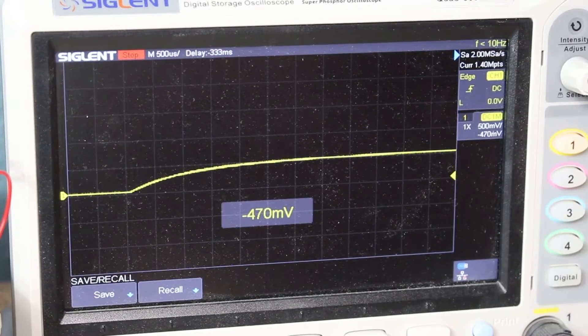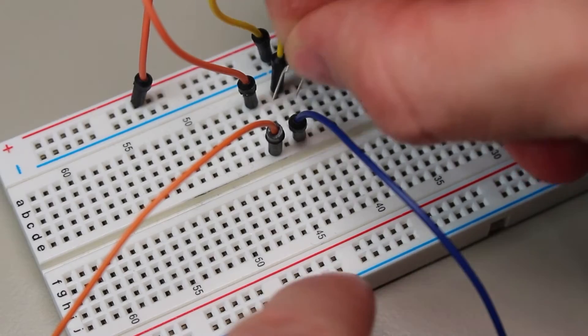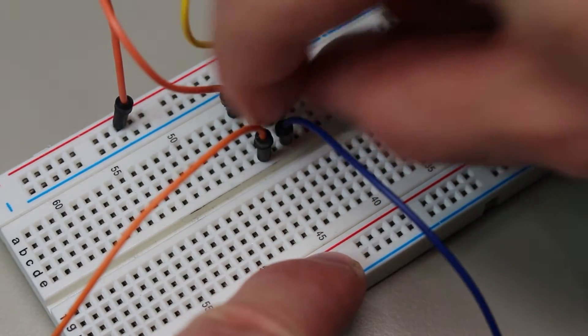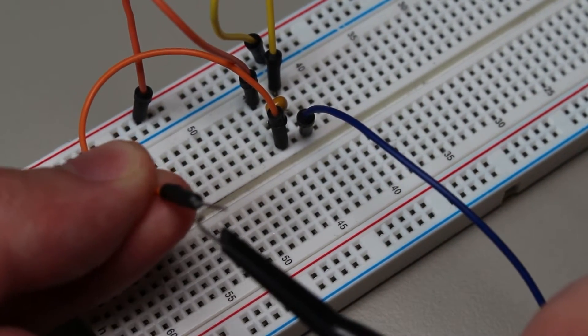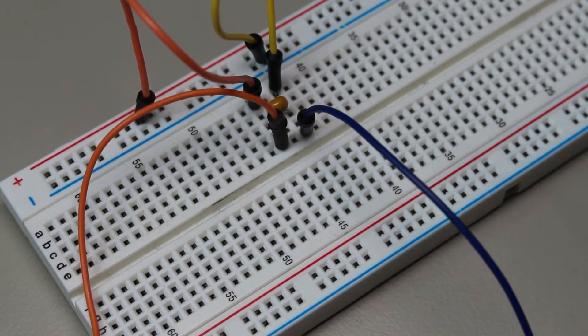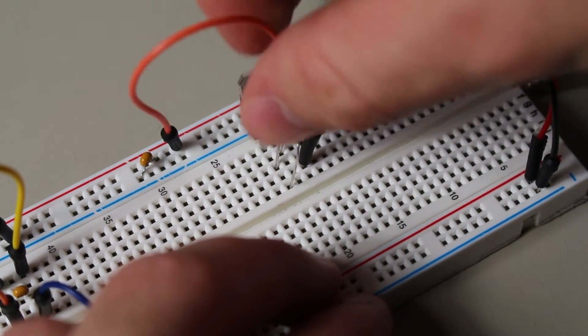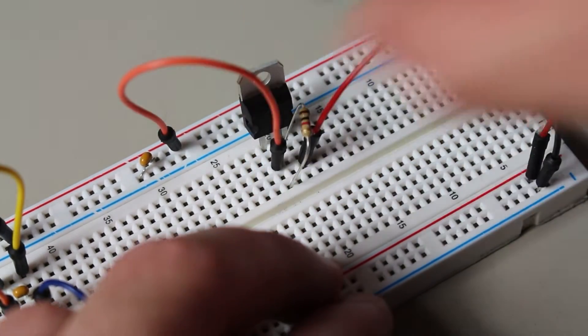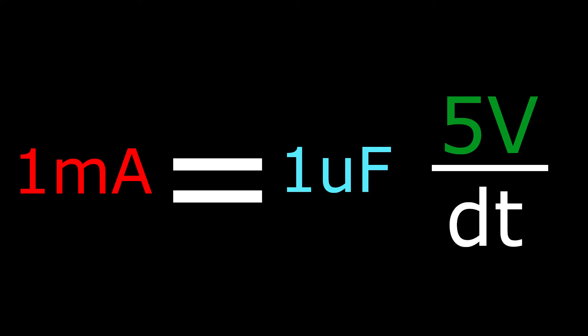The charging process can be modeled by this equation. The current equals the capacitance multiplied by the change in voltage over the change in time. This equation may be hard to grasp visually, so let's walk through an example. Let's say that we have a fully discharged 1 microfarad capacitor. Let's use the equation to find out how long it would take to charge up. I set up an LM317 to give us a constant current of 1 milliamp. That means that we can solve for voltage at a given time. To calculate how long it would take to get to 5 volts, we can just plug it into the equation. If we arrange and solve for DT, we should get 5 milliseconds.